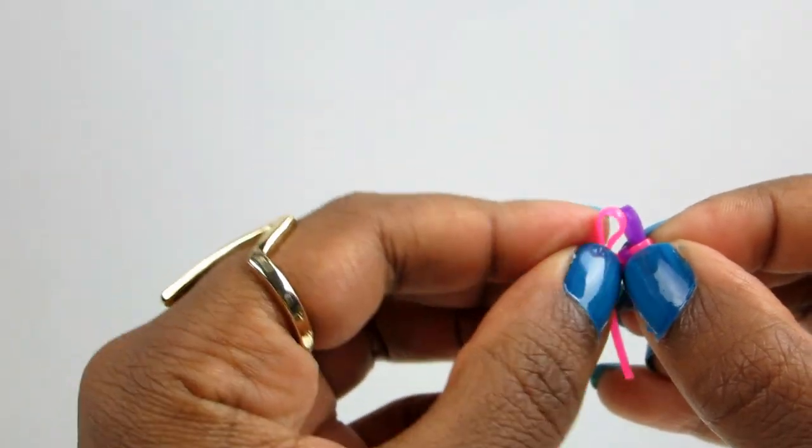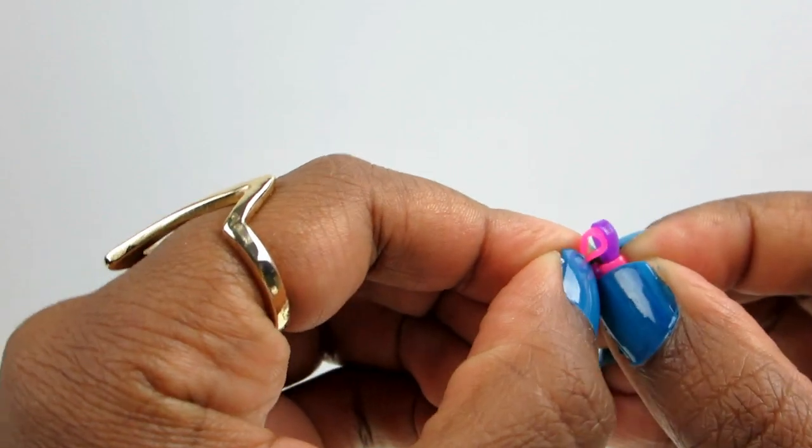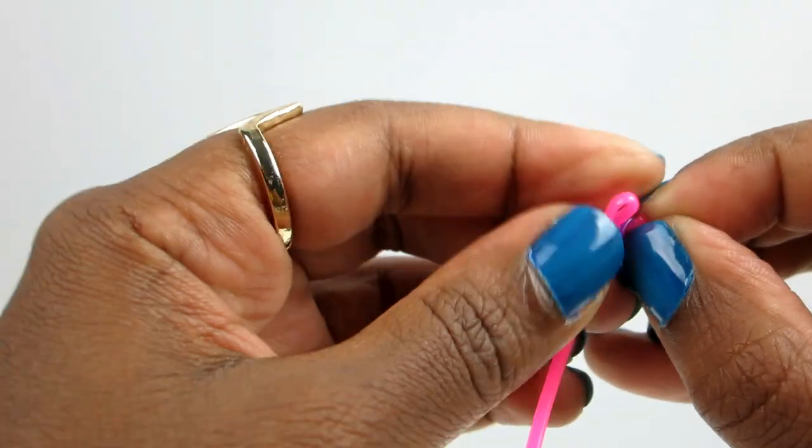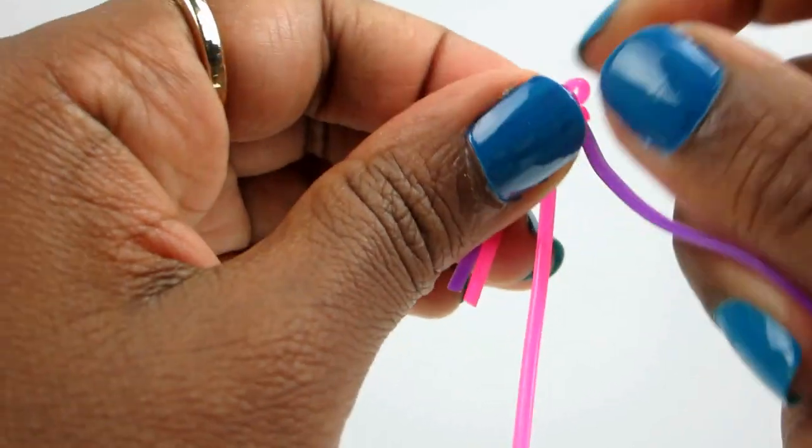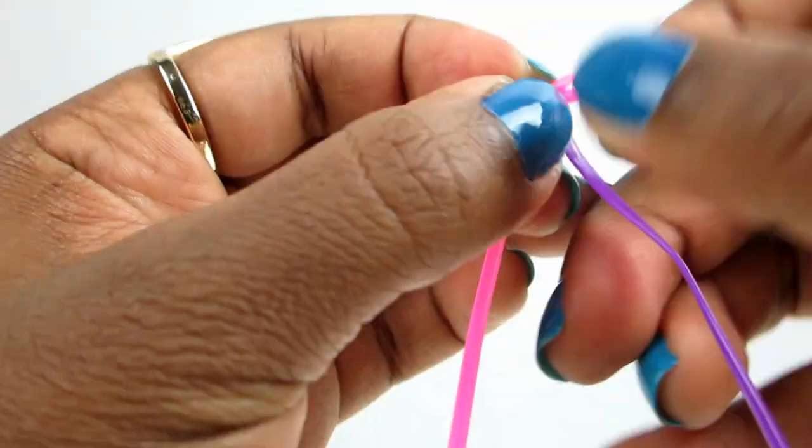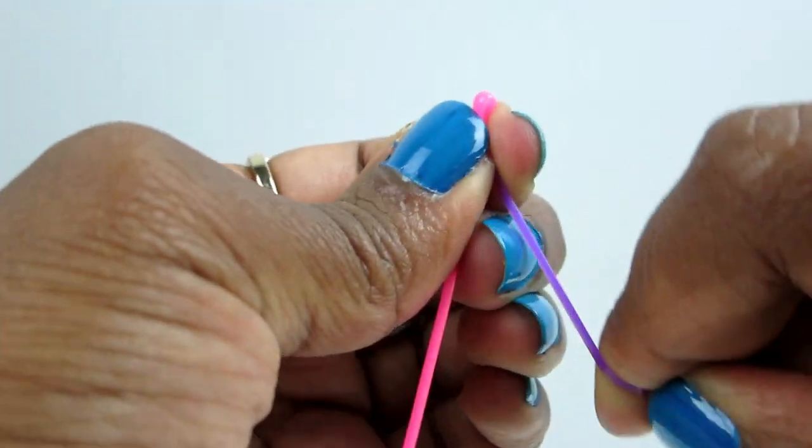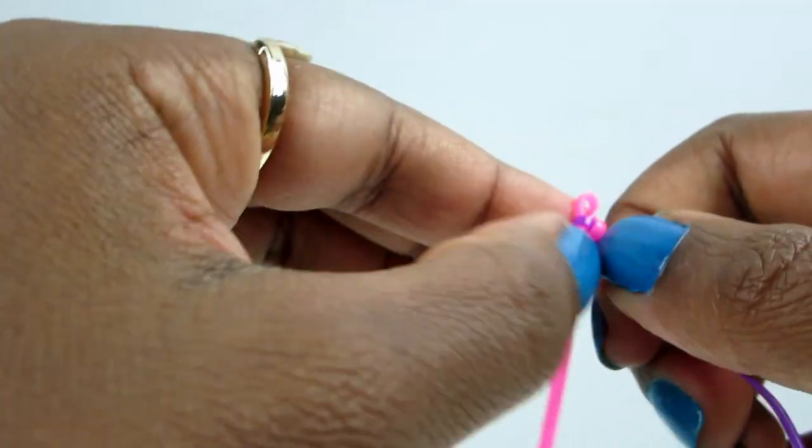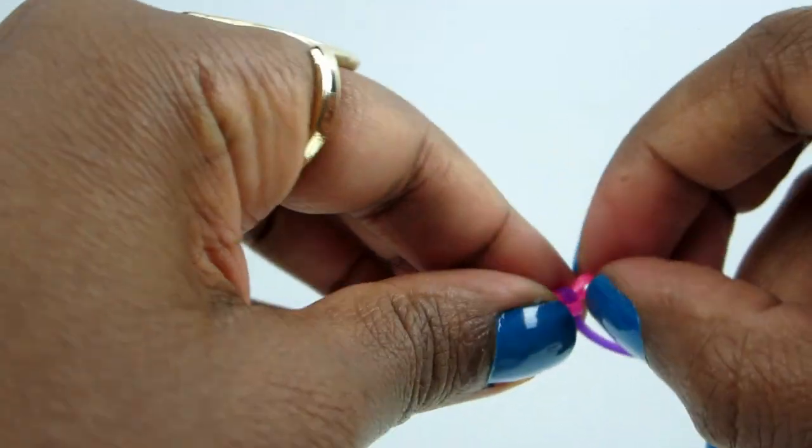you loop the pink through it and you pull the excess purple back and you just keep on going.